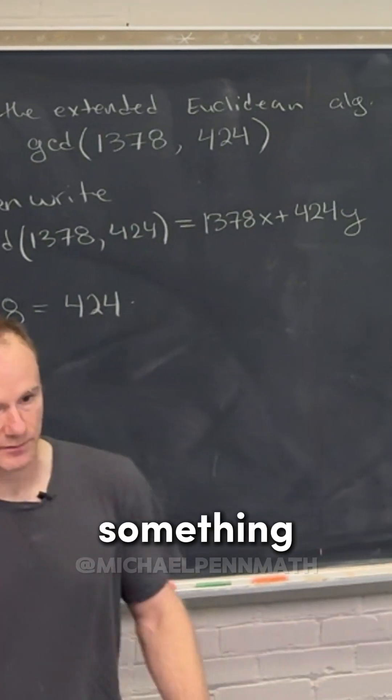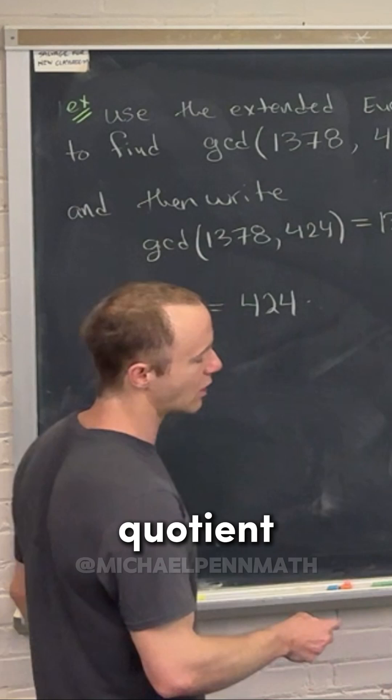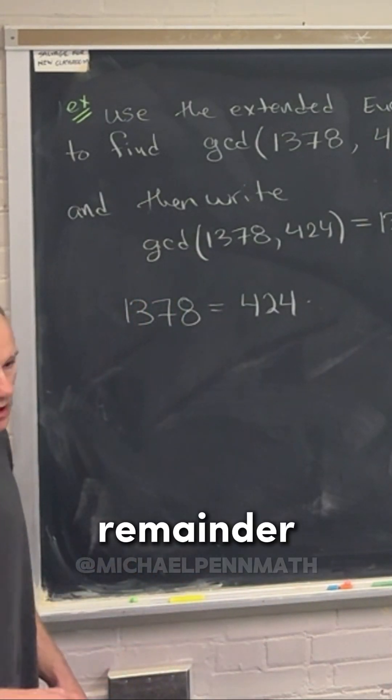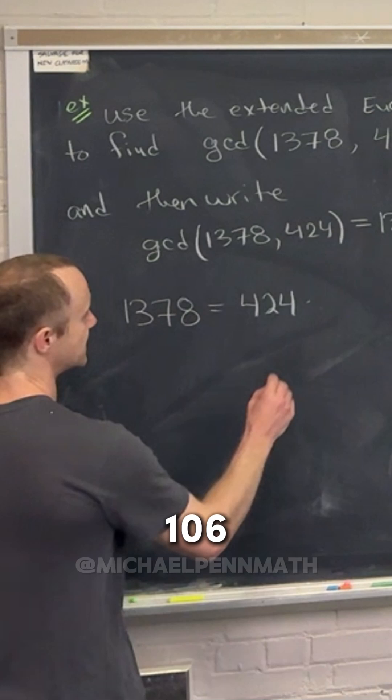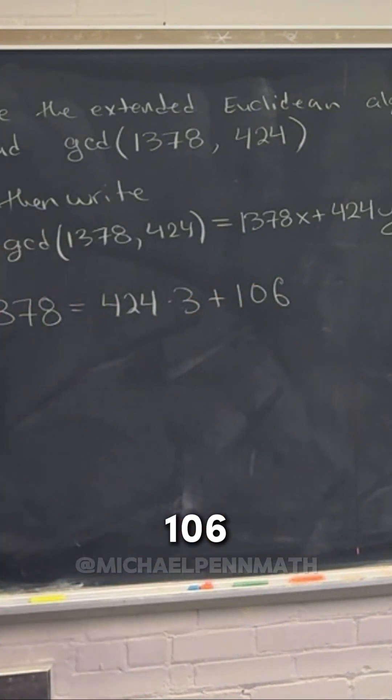The quotient plus the remainder. So it's going to be a quotient of three and a remainder of 106. So this is times 3 plus 106.